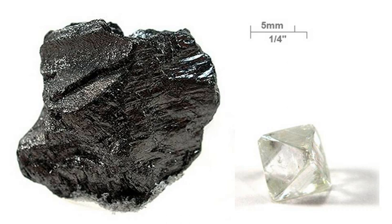For example, graphite can be oxidized by hot concentrated nitric acid at standard conditions to mellitic acid (C6), which preserves the hexagonal units of graphite while breaking up the larger structure. Carbon sublimes in a carbon arc, which has a temperature of about 5,800 K. Thus, irrespective of its allotropic form, carbon remains solid at higher temperatures than the highest melting point metals such as tungsten and uranium. Although thermodynamically prone to oxidation, carbon resists oxidation more effectively than elements such as iron and copper, which are weaker reducing agents at room temperature.